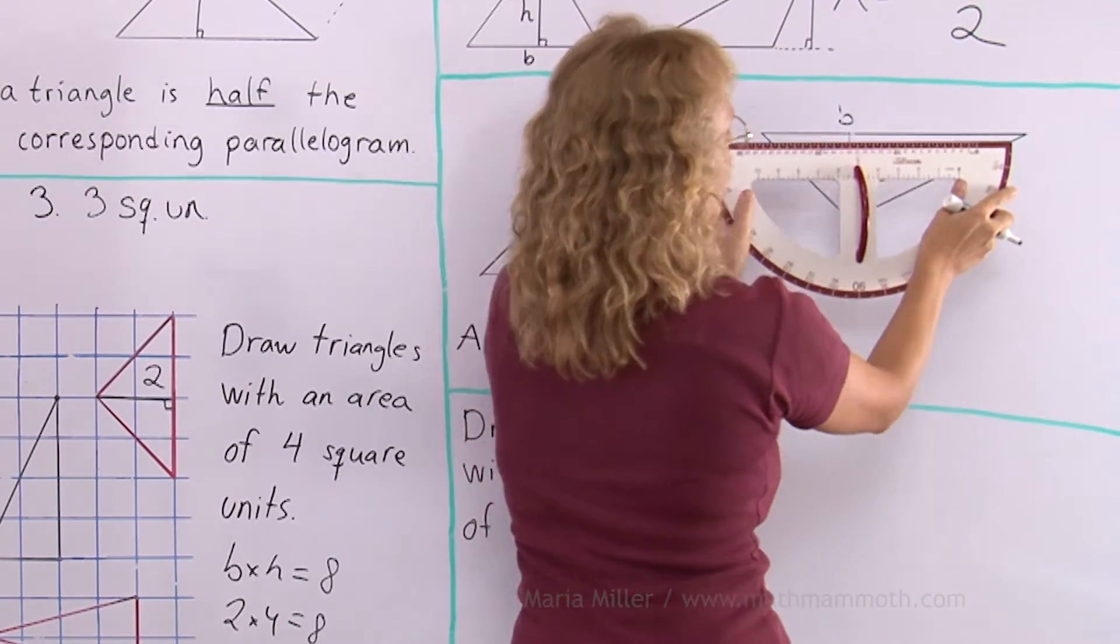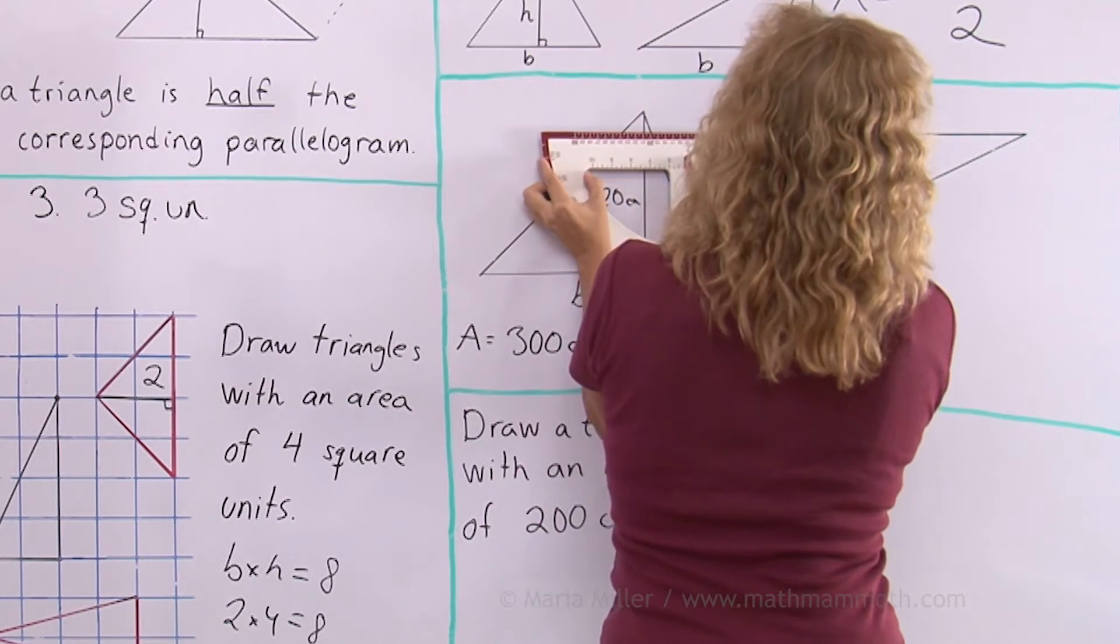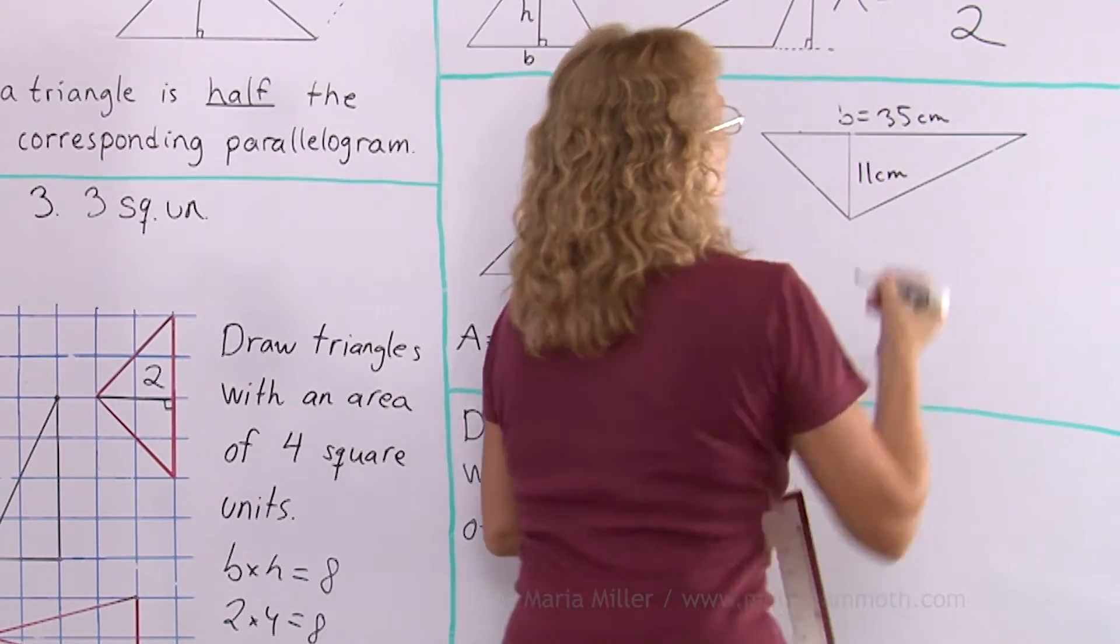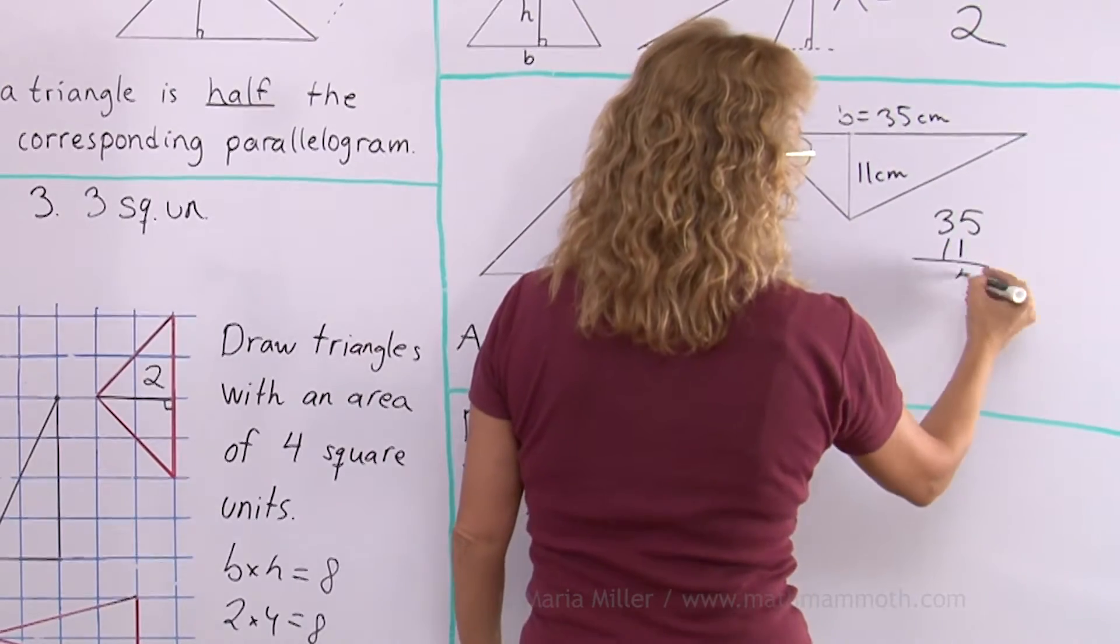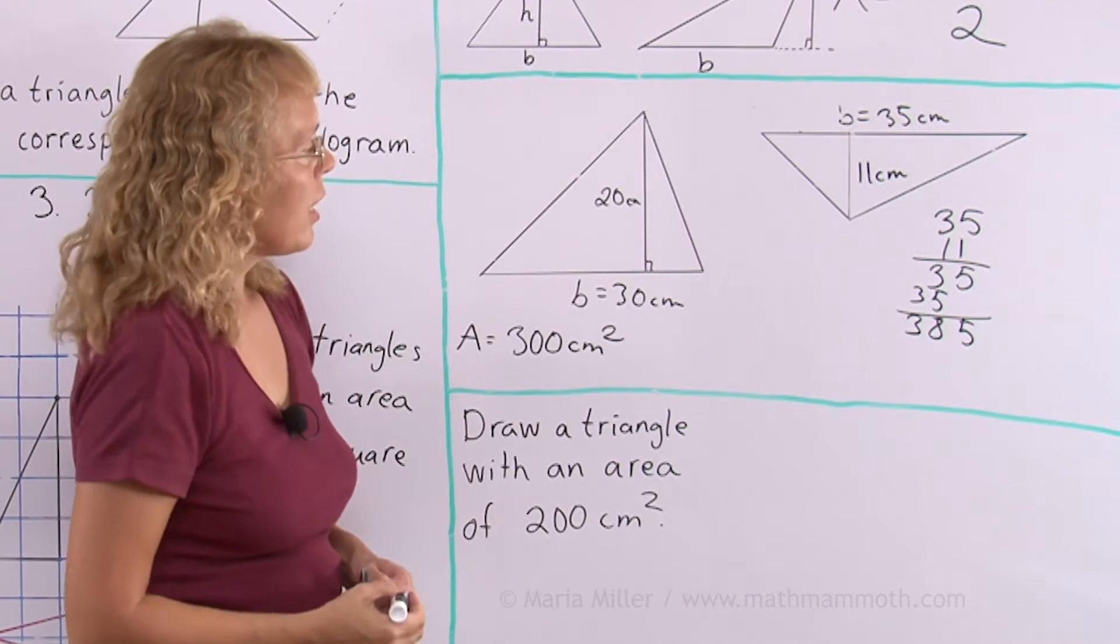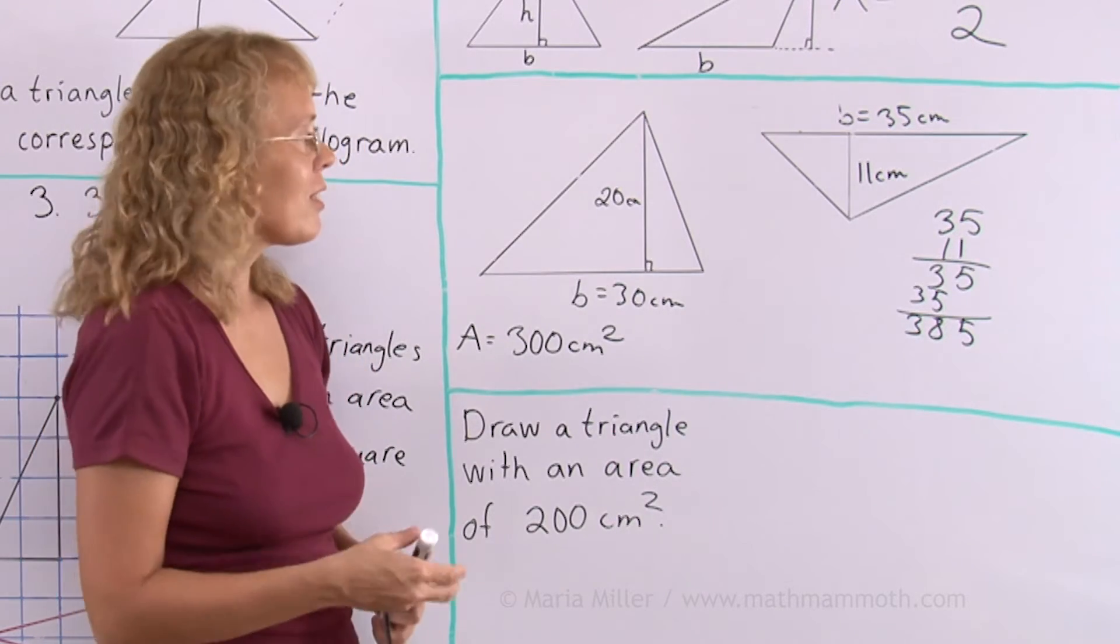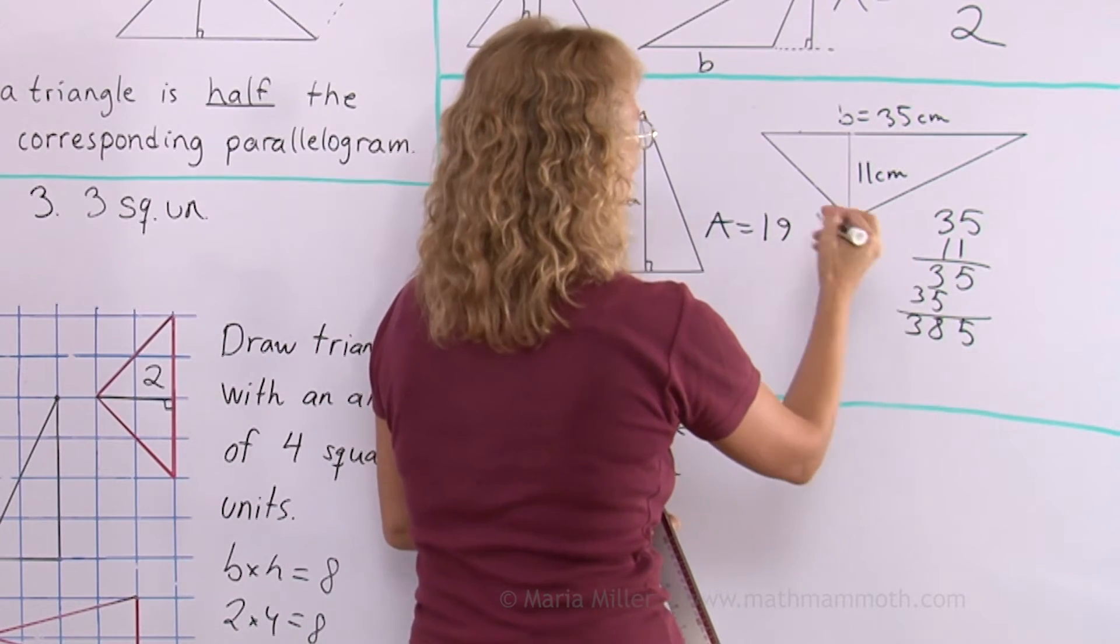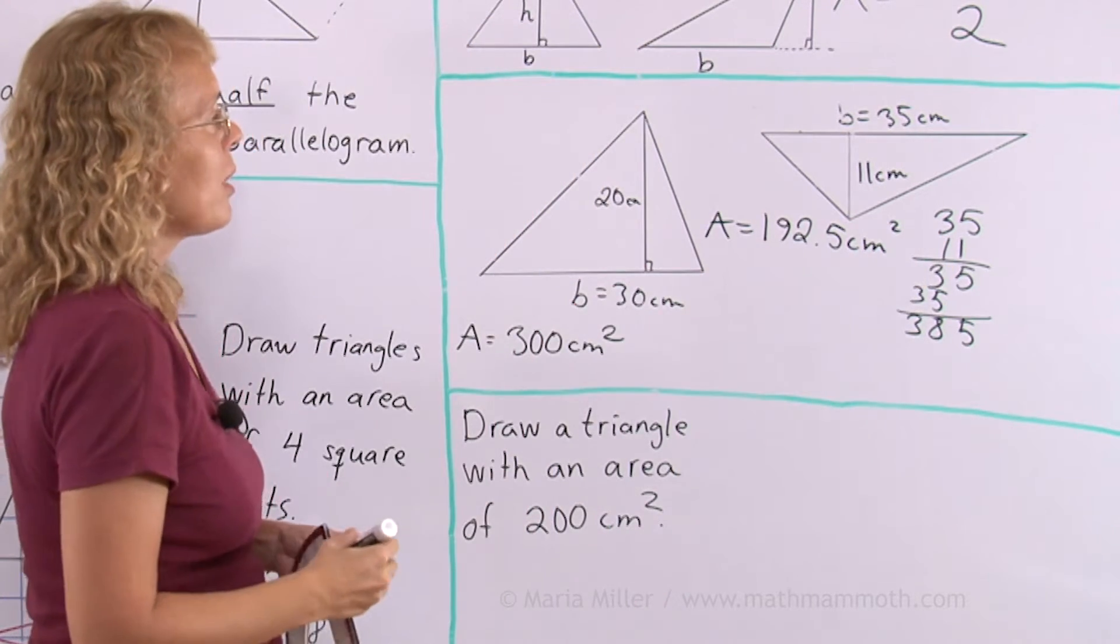And then this, measure this. It's 30 centimeters till that point. 35. Now we need to multiply and then take half of that. 385 and take half of that. Now if it was 380, half of it would be 190. 190. And then half of five is 2.5.